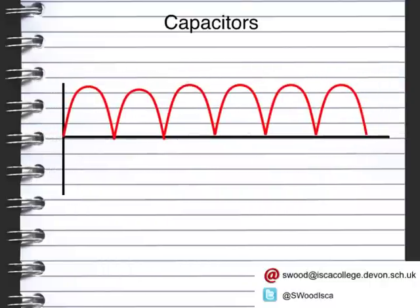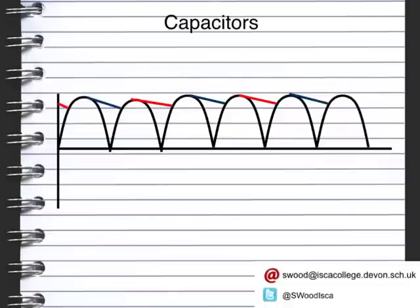Without the capacitor we have a pulsed current. With the capacitor, there are phases where it is charging and phases where it is discharging — charging and discharging repeatedly — so eventually we have a continuous, smoothed flow of electricity.